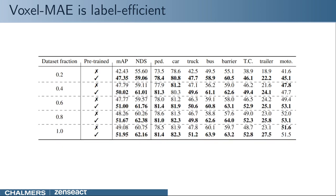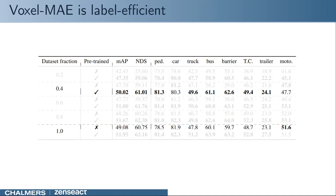Moreover, these trends hold also when the amount of labels is increased, proving the effectiveness of our approach. Further, we can see that voxel-MAE only requires 40% of the annotations to outperform its randomly initialized equivalent.